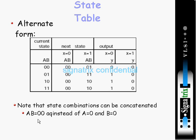Note that state combinations can be concatenated. AB=00 instead of A=0 and B=0. This is nothing different.